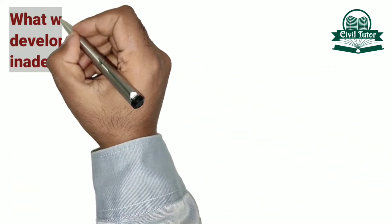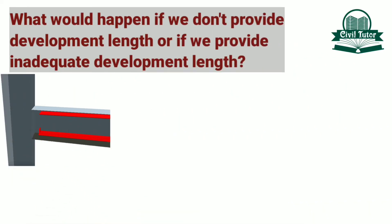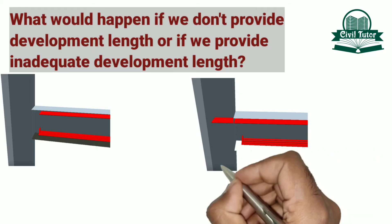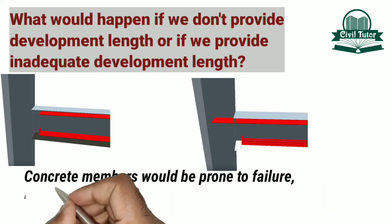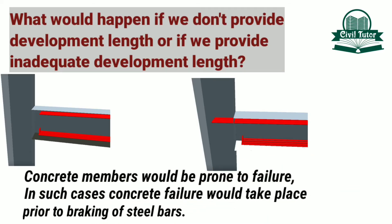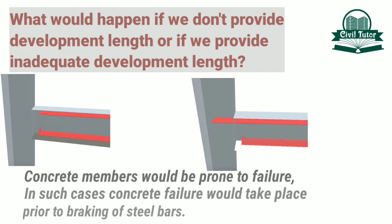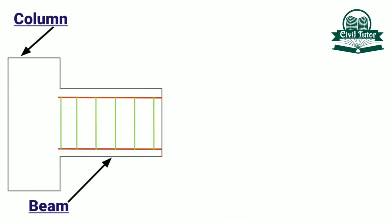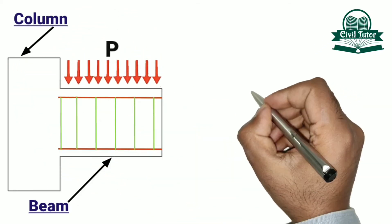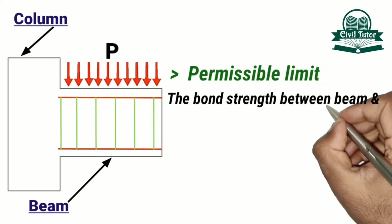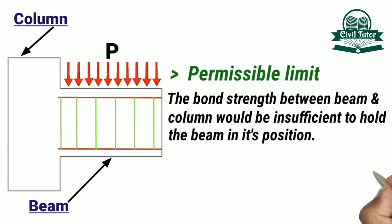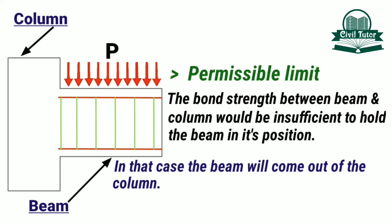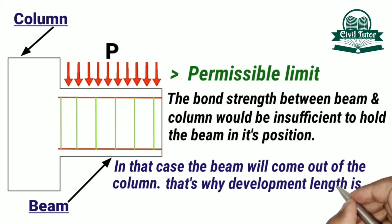What would happen if we don't provide development length or if we provide inadequate development length? Concrete members would be prone to failure. In such cases, concrete failure would take place prior to the breaking of steel bars. For illustration, consider a beam-column system without development length provided. If we apply a load more than the permissible limit, the bond strength between beam and column would be insufficient to hold the beam in its position, and the beam will come out of the column. That's why development length is necessary to be provided.